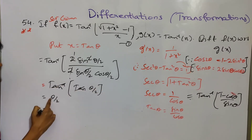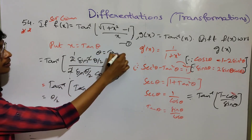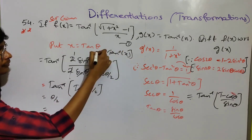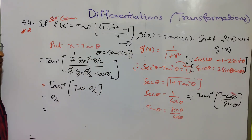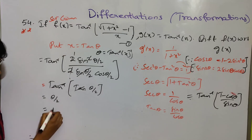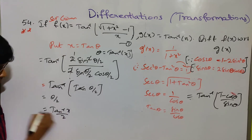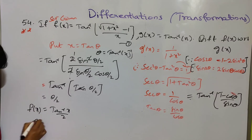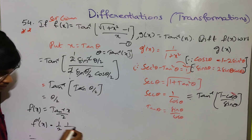So we get tan inverse of tan theta by 2. Tan inverse and tan cancel, giving theta by 2. And since x equals tan theta, theta equals tan inverse x. So f of x equals tan inverse x by 2. Therefore f dash of x equals 1 by 2 times d by dx of tan inverse x, which is 1 by 1 plus x squared.